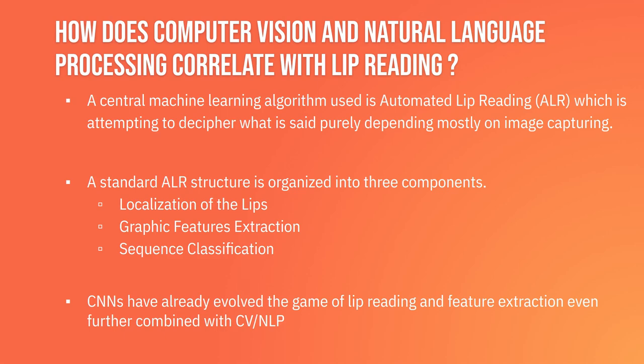In its early stages, ALR combined with computer vision and NLP models focused on finding the alphabet or digit recognition — finding that P or B or those types of letters. Then as successful stages of alphabet recognition came along, it went more into word and sentence recognition, because it's trying to find the whole sentence instead of piecing together each letter.